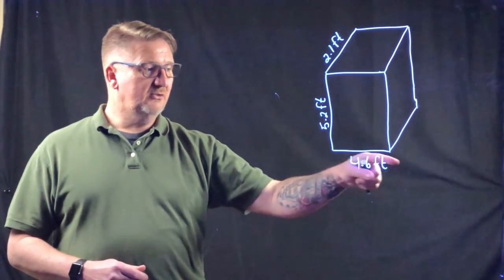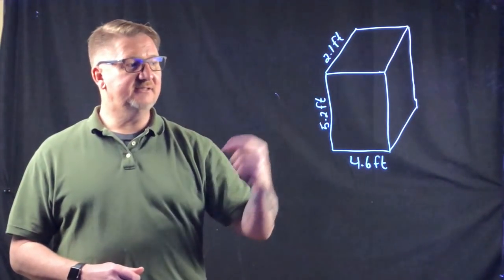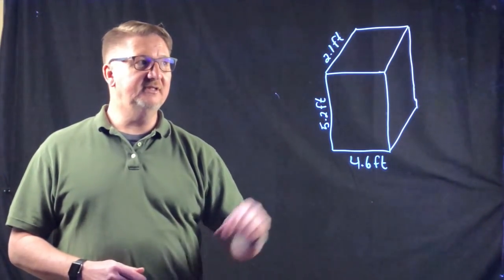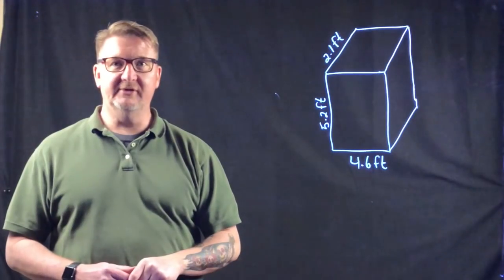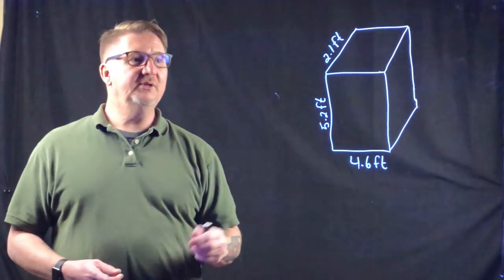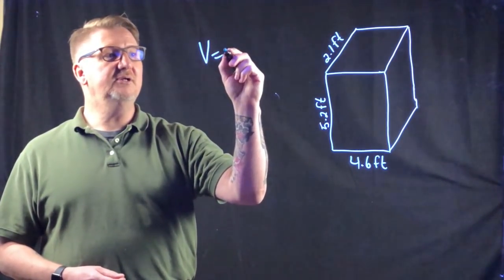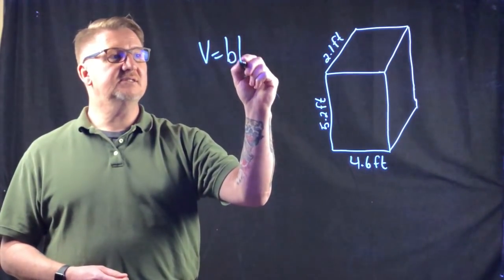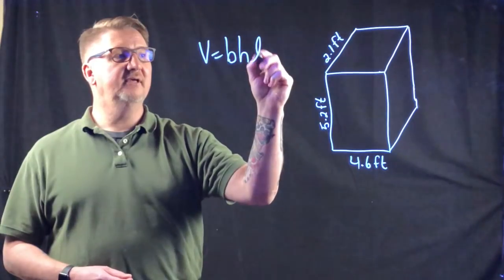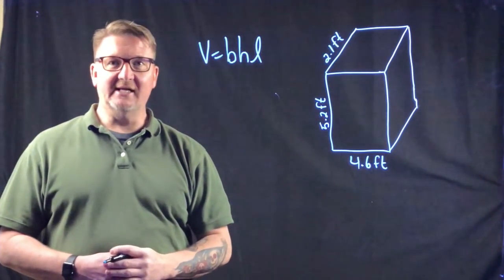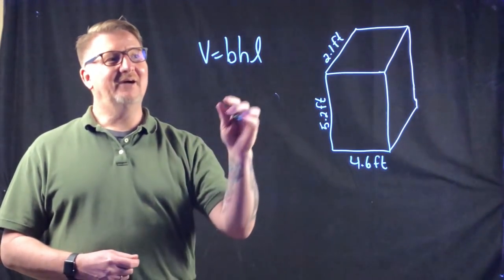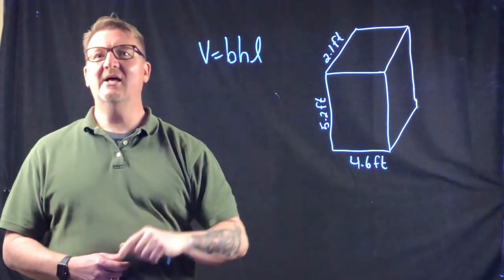In our first example I have a rectangular prism. Its length is 4.6 feet, its height is 5.2 feet, and its depth is 2.1 feet. We use the formula: volume equals base times height times length.